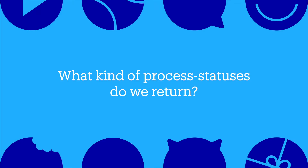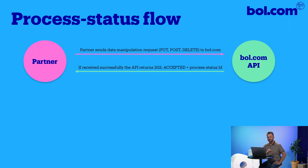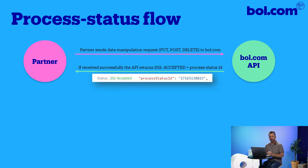Using the process status endpoint allows you to determine if your request was successfully processed. When sending a data manipulation request to us, you receive a 202 accepted header and a process status ID. This ID shows your request has arrived in the internal queue. However, it does not mean it has been successfully processed.